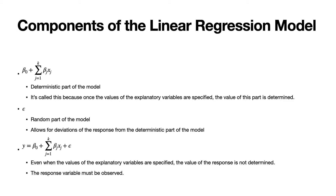When we combine the deterministic part and the random error term, we get the response. But notice that even when the values of the explanatory variables are specified, the value of the response is not determined — because the error term adds random noise to that deterministic component. So the response variable needs to be observed.